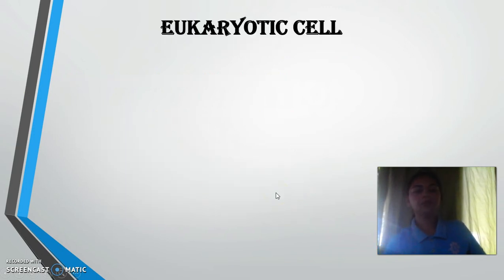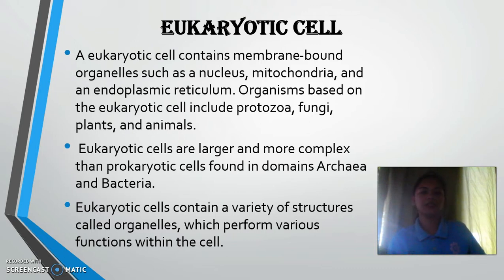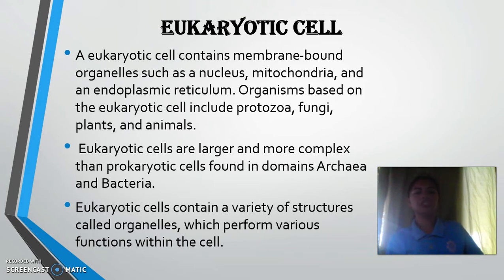A eukaryotic cell contains membrane-bound organelles such as the nucleus, mitochondria, and endoplasmic reticulum. Organisms based on the eukaryotic cell include protozoa, fungi, plants, and animals.